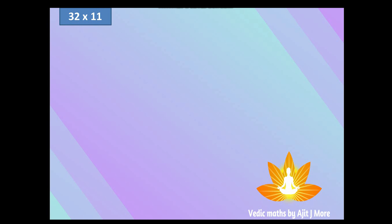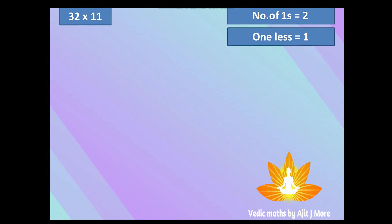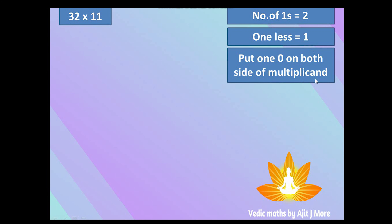As an example we'll see 32×11. First step: see how many ones are there — the number of ones is two. Now take one less, which is one. Put one zero on both sides of your multiplicand. The number getting multiplied is the multiplicand — in our case 32 — and the number you multiply by is the multiplier, which is 11. So we put one zero on both sides of 32.